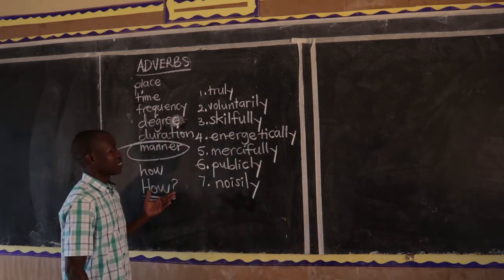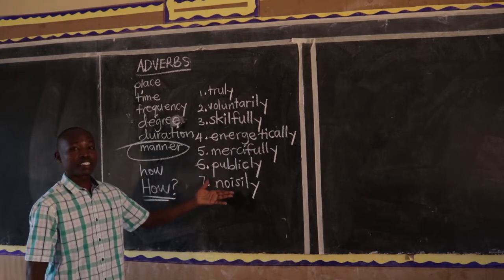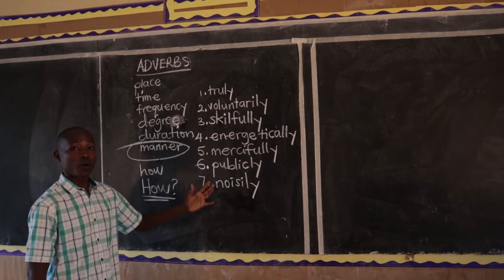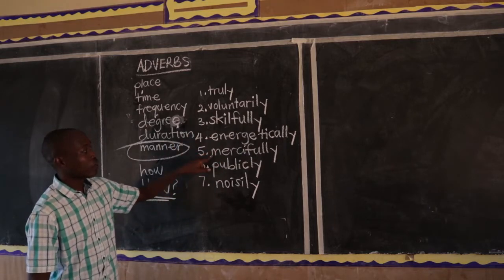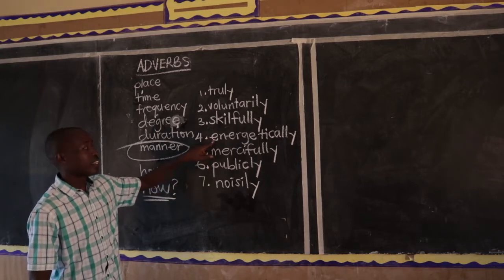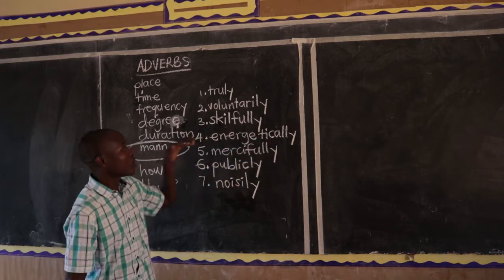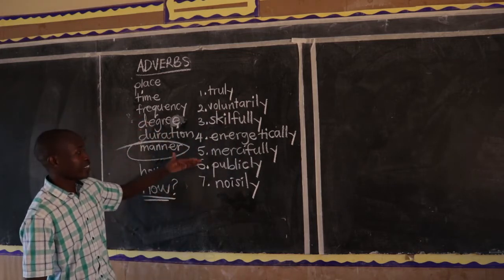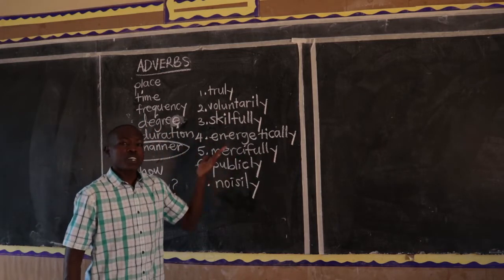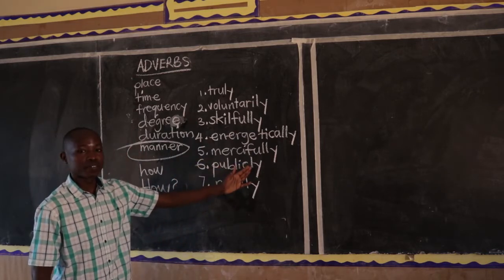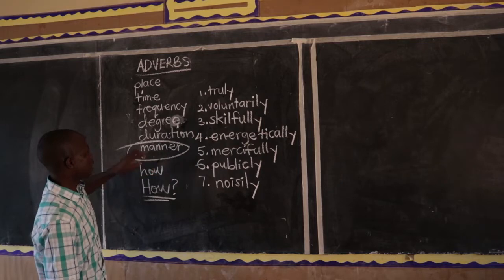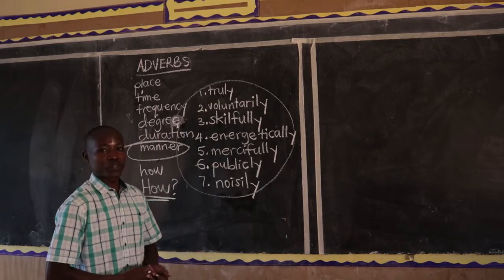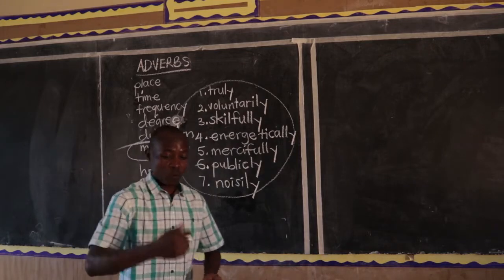The words I gave you in the spelling activity — all of them are examples of adverbs of manner. They answer the question of how. How did he handle you? He handled me massively. How did he lift the desk? He lifted the desk energetically. How did he behave in class? He behaved in class noisily. How was it done? It was done publicly. Examples of adverbs of manner are many, but these are some, and I am sure you can also list some.